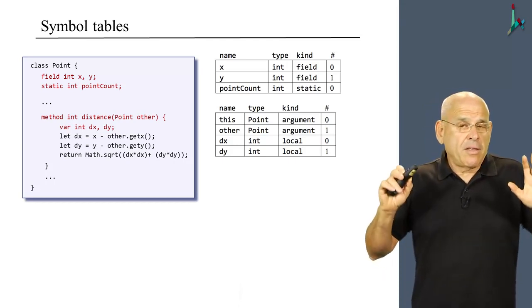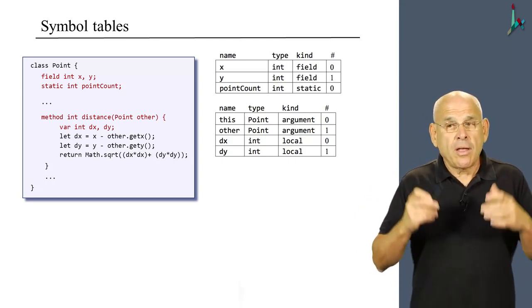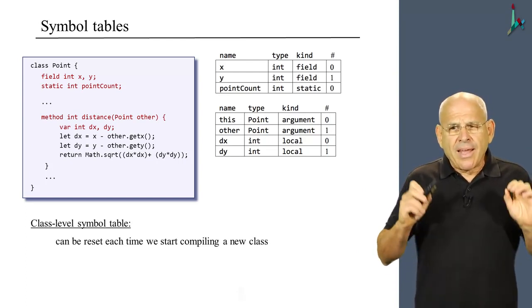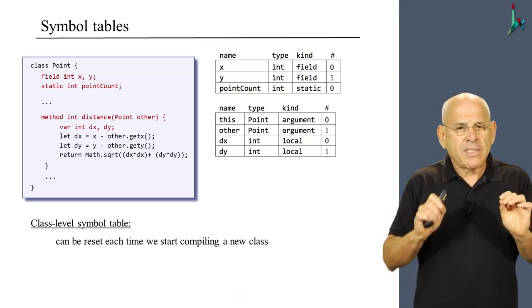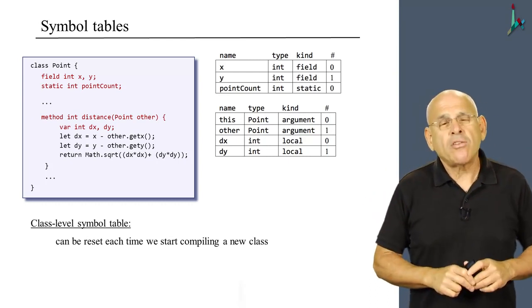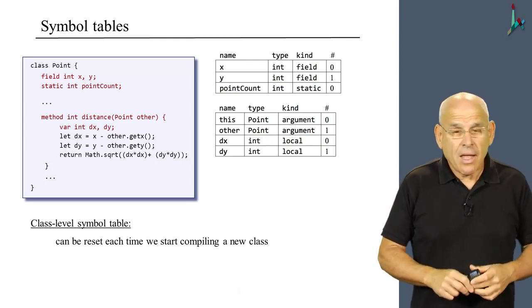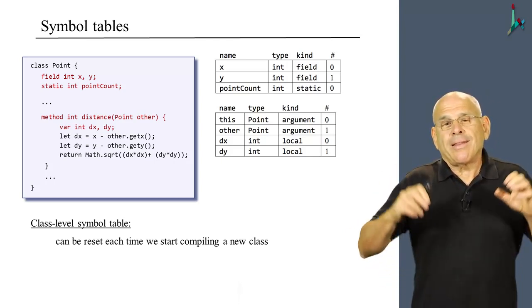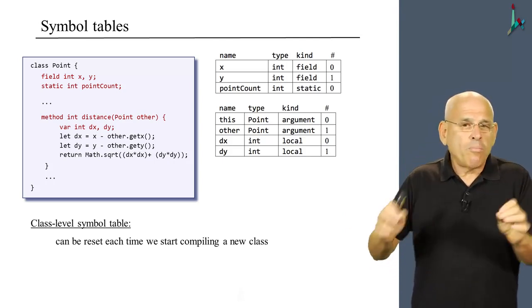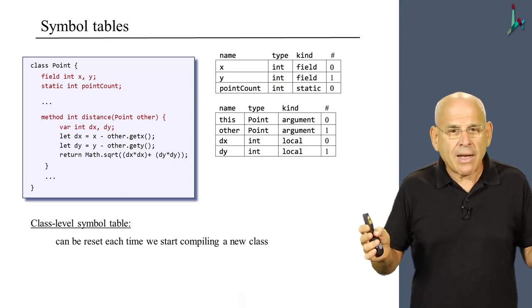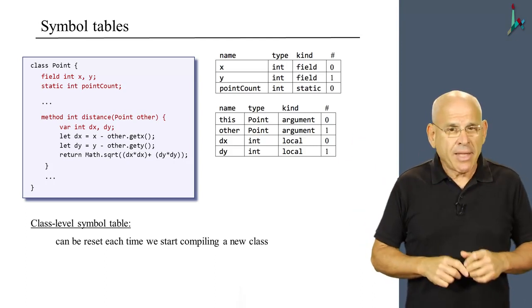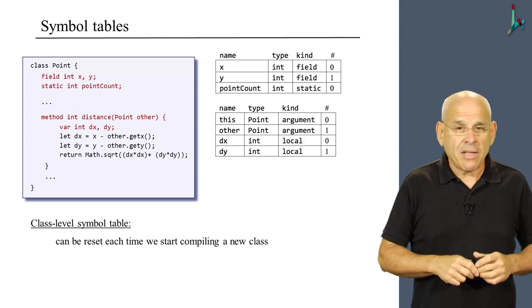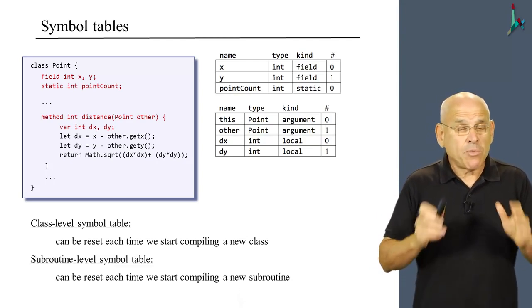We have an other variable of type point also, it's an argument, argument number one. And then we have two local variables, very simple. So these are the two symbol tables that we need in order to manage the variables of this application. Now, the class level symbol table can be reset each time we begin to compile a new class.